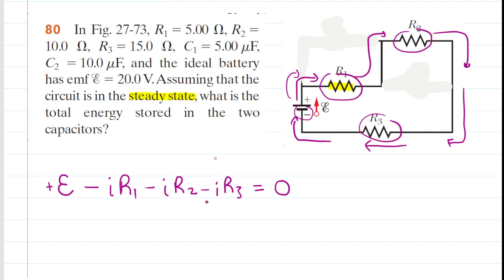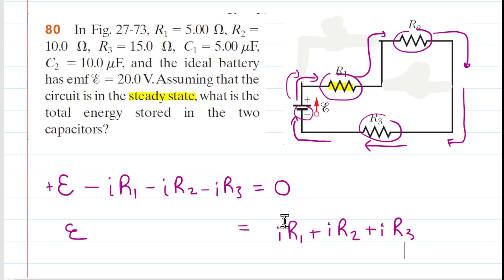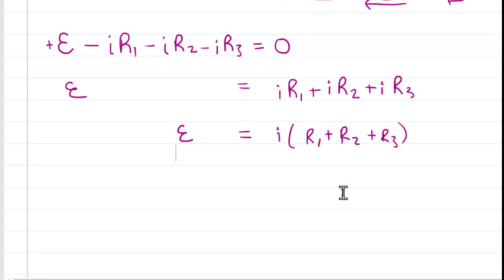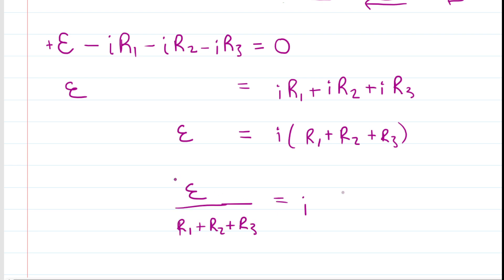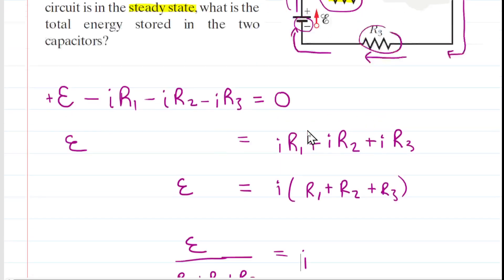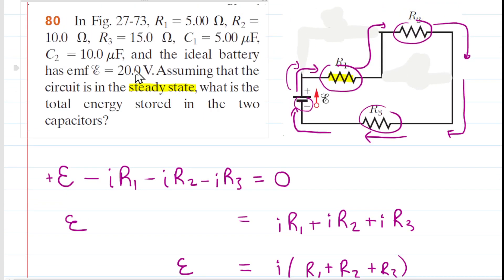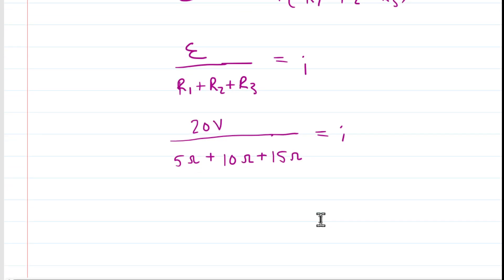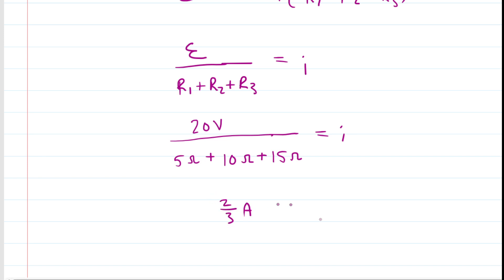We can solve this equation for the current by moving all the IR terms to the other side. We factor out the current I, then divide by the parenthetical term, which is the sum of the resistance values. Plugging in the values given in the problem — the battery potential and all three resistance values — and when we simplify, we get a current of two-thirds amps.